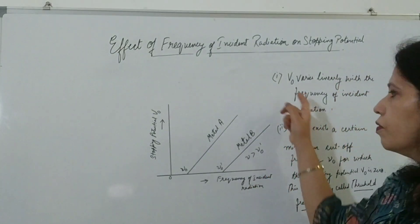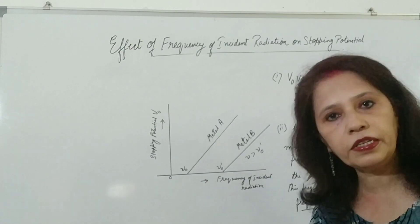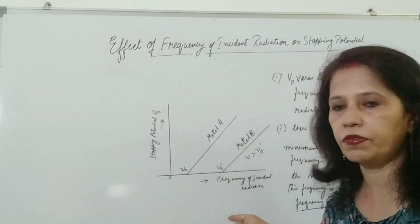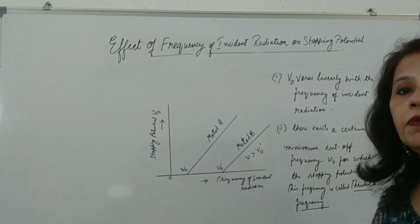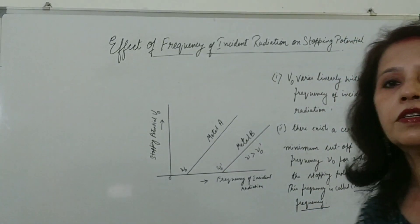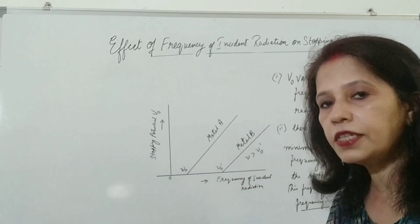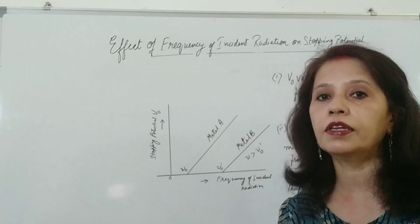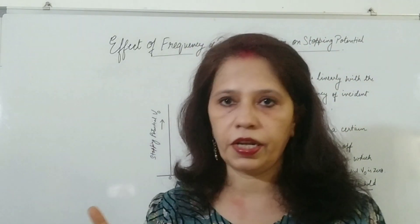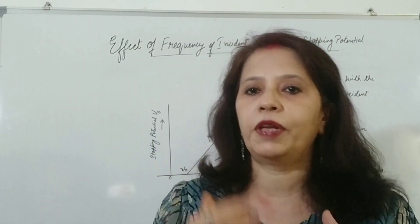In this graph, V₀ — the stopping potential — varies linearly with the frequency of incident radiation. We have taken two metals A and B and drawn graphs for each case. There exists a certain minimum cutoff frequency ν₀ for which the stopping potential V₀ is 0 — this is called the threshold frequency. Below this threshold frequency, photoelectric emission will not take place, and above this threshold frequency, photoelectric emission takes place spontaneously.